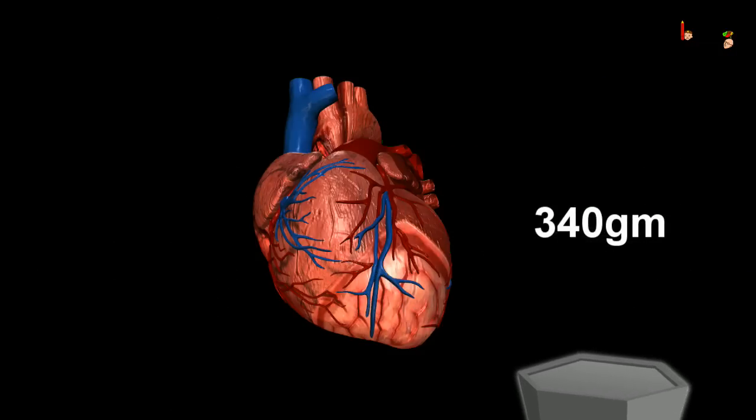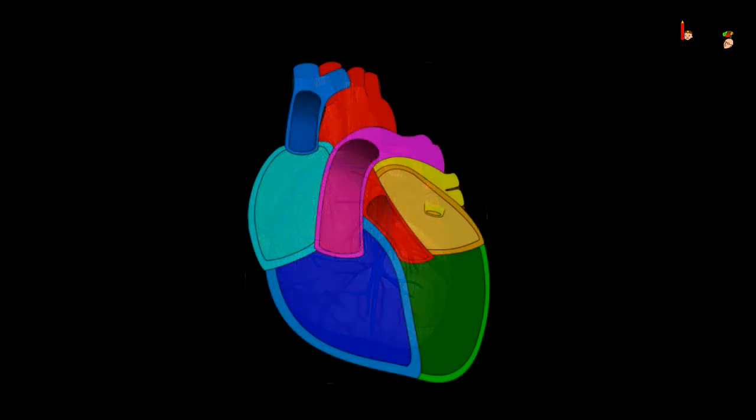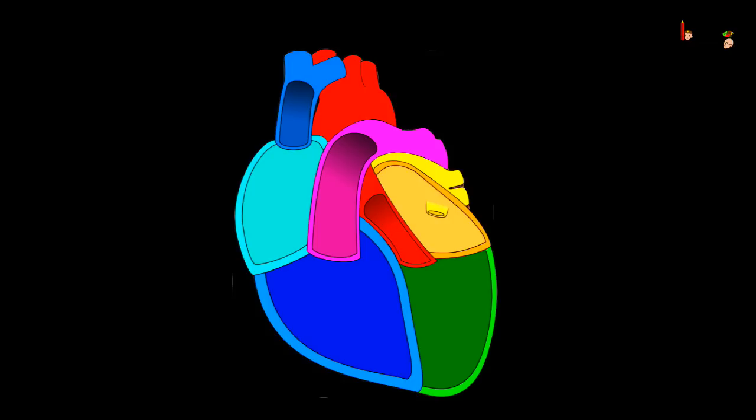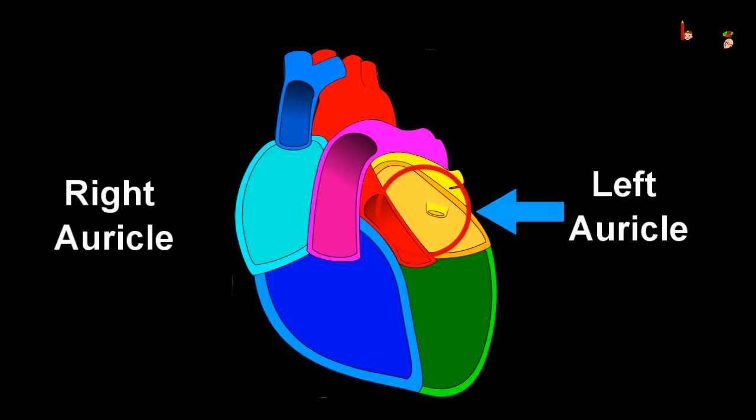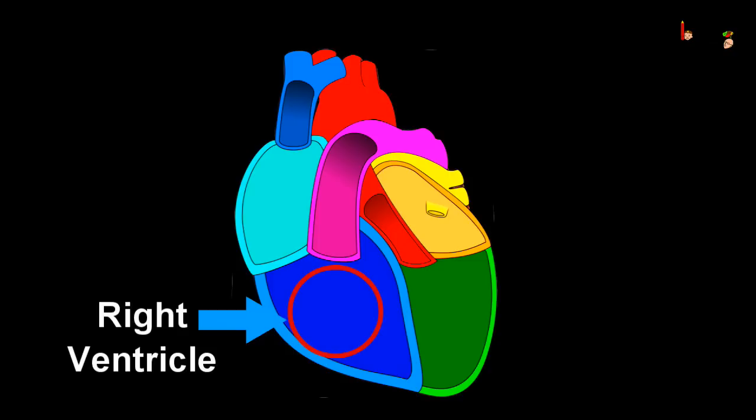The heart is a four-chambered muscular organ. Its four chambers are right atrium, left atrium, right ventricle, and left ventricle.